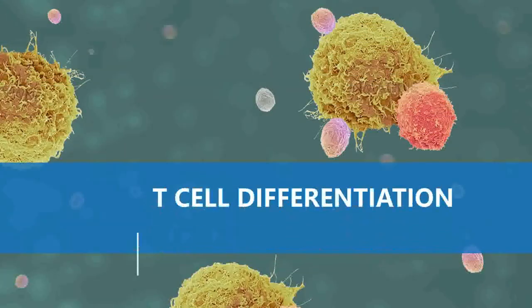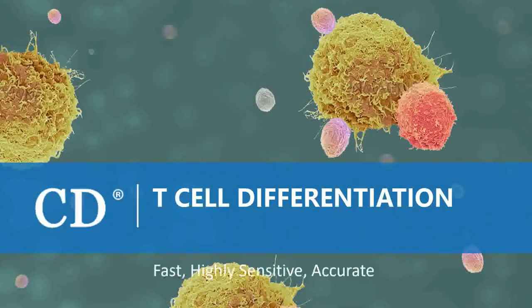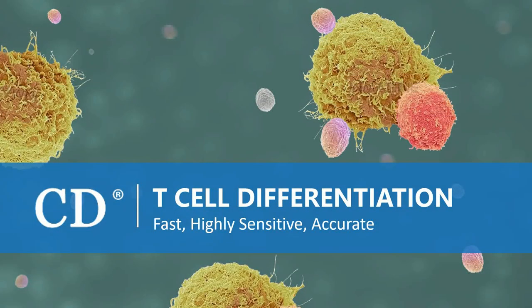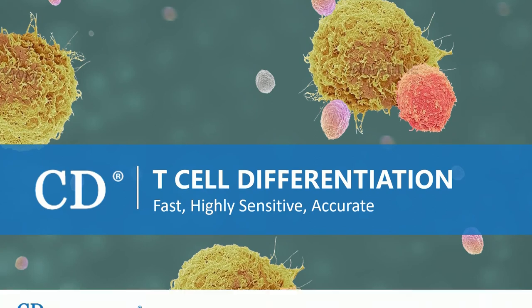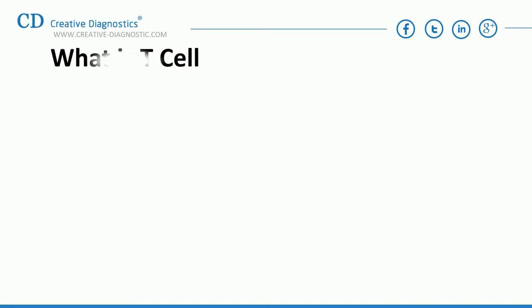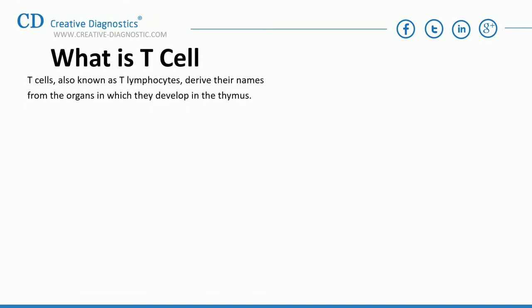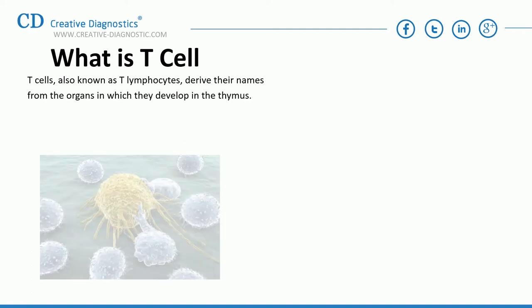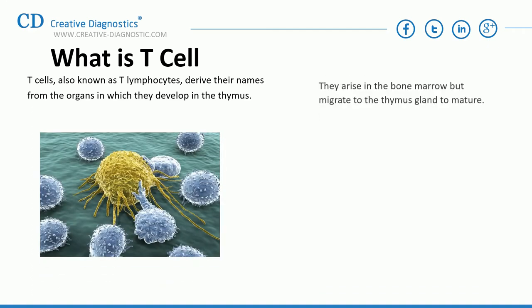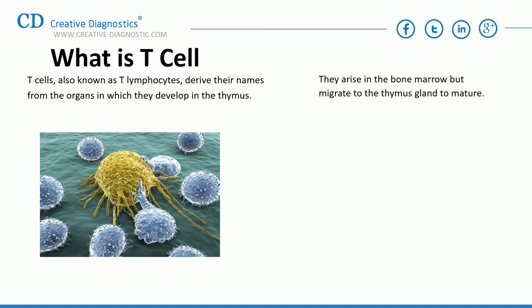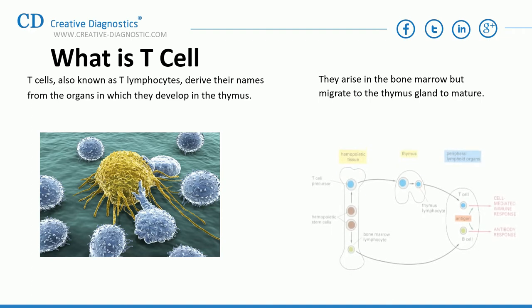Creative Diagnostics — T-cell Differentiation. First of all, what is a T-cell? T-cells, also known as T-lymphocytes, derive their name from the organ in which they develop: the thymus. They arise in the bone marrow but migrate to the thymus gland to mature.